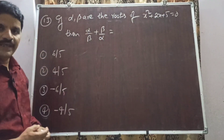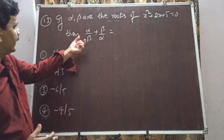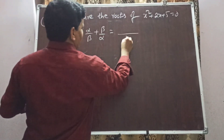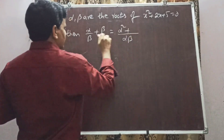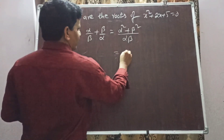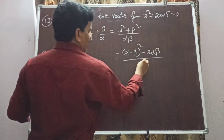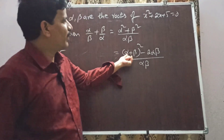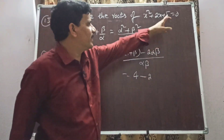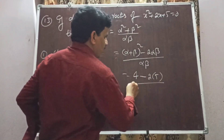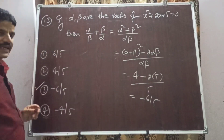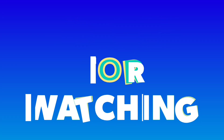Question 13: If alpha and beta are roots of x² + 2x + 5 = 0, then alpha/beta + beta/alpha equals how much? Taking LCM: (alpha² + beta²)/(alpha·beta). Using identity: alpha² + beta² = (alpha+beta)² - 2·alpha·beta. Sum of roots = -2/1 = -2, so (-2)² = 4. Product of roots = 5/1 = 5. Result: (4 - 2×5)/5 = (4-10)/5 = -6/5. Option 3 is the right answer.